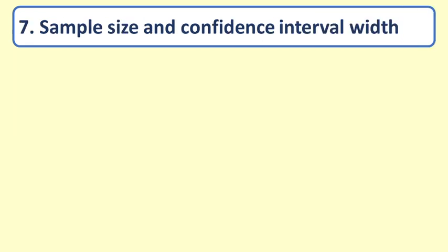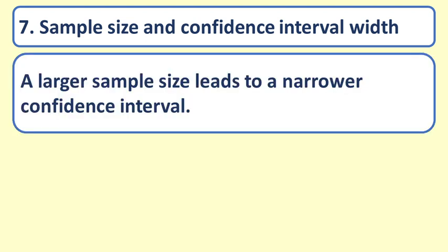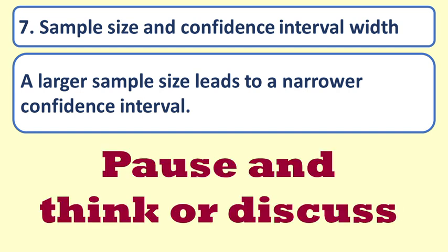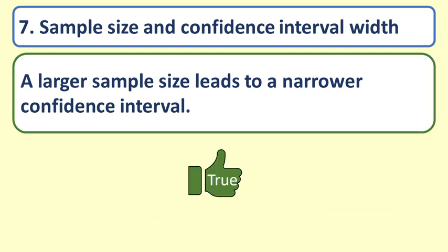Question 7: Sample size and confidence interval width. A larger sample size leads to a narrower confidence interval. True. A larger sample leads to a smaller confidence interval. You have more information, so you can reduce the size of your confidence interval.